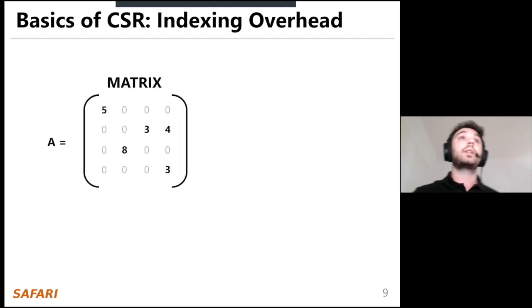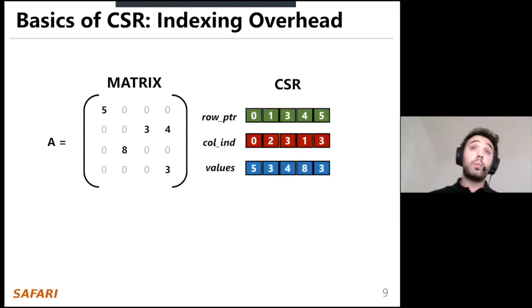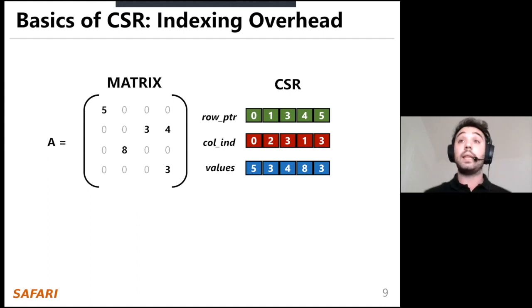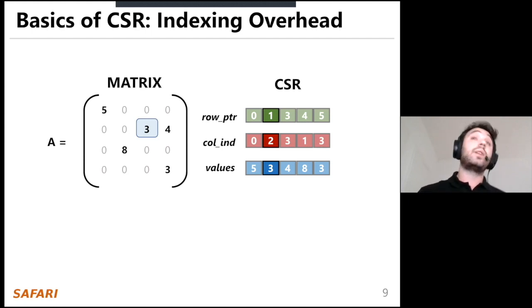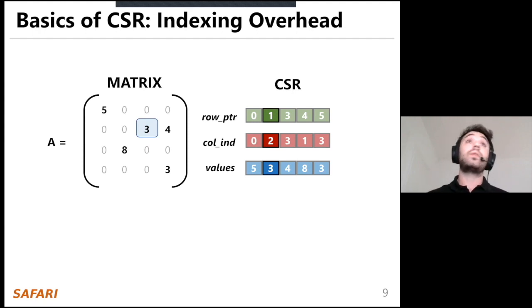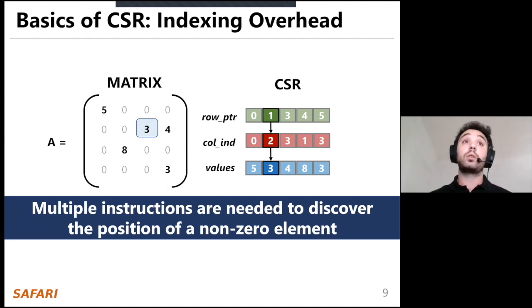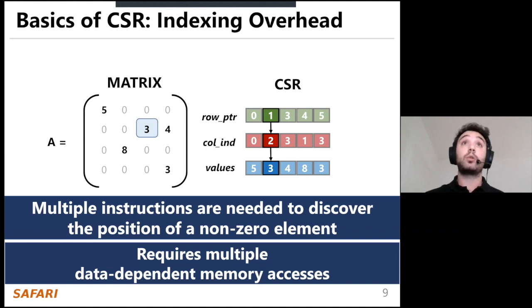Consider a sparse matrix A with many zero elements. The CSR format compresses it using three arrays: the row pointer, the column index, and the values array. The row pointer holds the number of non-zero elements per row. The column index holds the column index of each non-zero element, and the values array stores the non-zero values. To find the position of a specific element, we need to access the row pointer to find which row it belongs to, then find its column index, and finally access the values array for the value. This requires multiple data-dependent instructions.